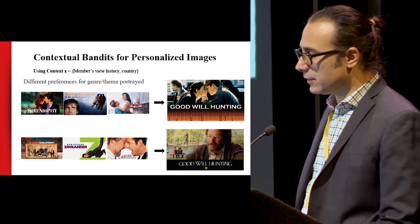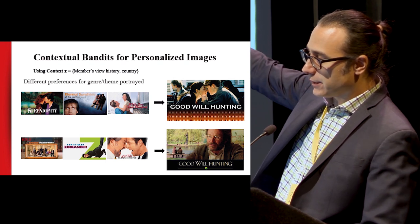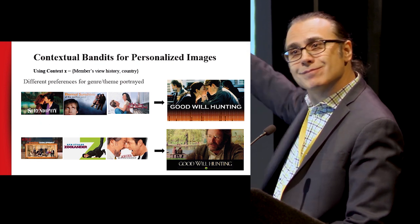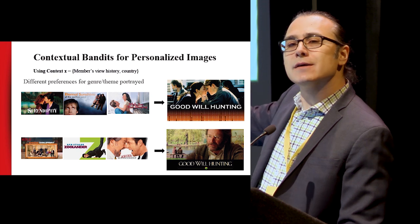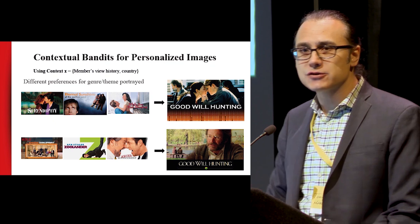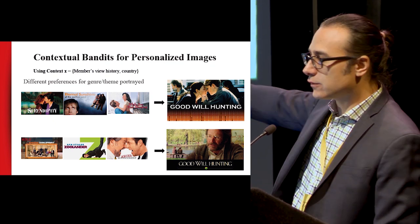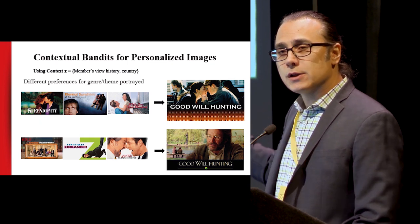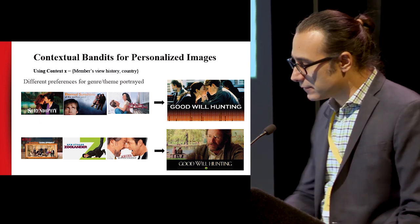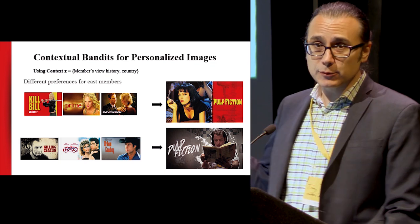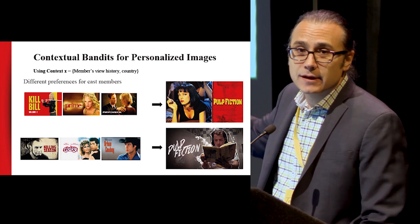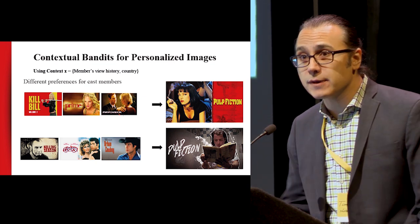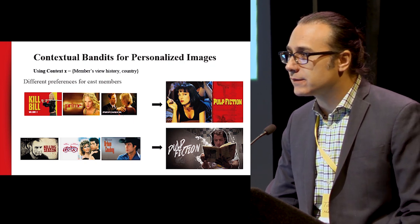If you watch a lot of romance — like Serendipity, Eternal Sunshine, and While You Were Sleeping — the best image for Good Will Hunting turns out to be the romantic one. The algorithm figures out that's the gateway into this movie for you: we know you like romance, and here's a romantic thing that happens. For another user who watches a lot of silly comedies, the algorithm suggests the Good Will Hunting picture with Robin Williams, because he's a comedian. Similarly, if you watch a lot of Uma Thurman movies, for Pulp Fiction show the picture with Uma. If you watch a lot of John Travolta movies, show the picture with Travolta. This is automatically inferred from data without anyone specifying deterministic rules — it's learned.